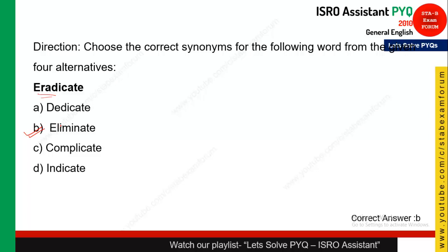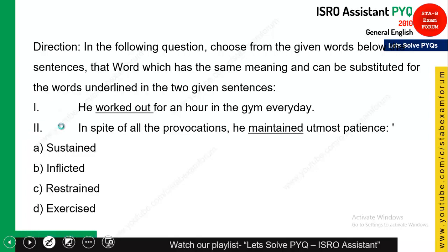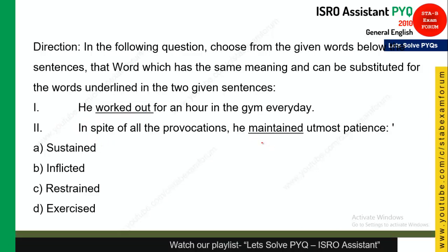In this question there are two statements with underlined words, and you need to pick a word that can replace the underlined words in both sentences. The sentences are: 'He worked out for an hour in the gym' and 'In spite of all provocation he maintained utmost presence.' The meanings of 'worked out' and 'maintained' here must match. 'Exercised' fits both — 'he exercised for an hour in the gym' and 'he exercised utmost patience.' So option D is the correct answer.